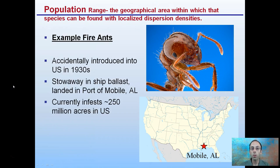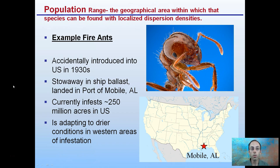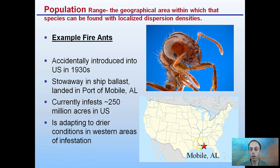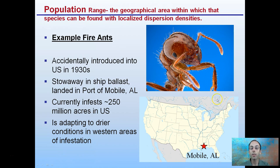Population range is a geographic area within which a species can be found with localized dispersion densities. For example, fire ants were accidentally introduced to the United States in the 1930s, stowed away on ship ballasts that landed at the port of Mobile, Alabama. Currently they infest about 250 million acres in the United States, adapting to drier conditions in western areas, so their population range is increasing.